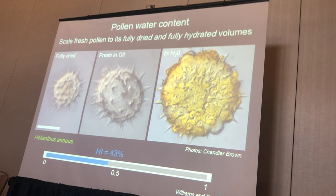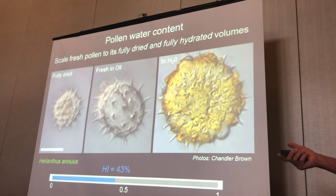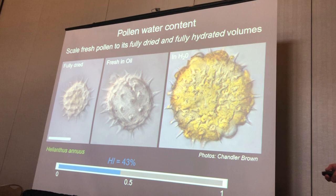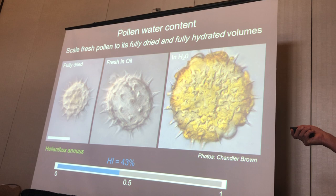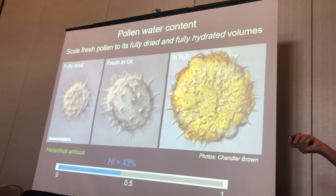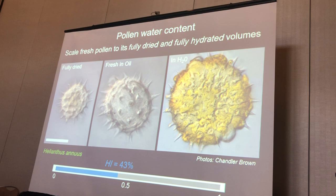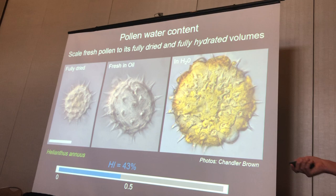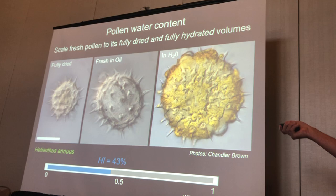Bicellular pollen has a lot of other things associated with it, one of which is water content. Pollen in general is often dehydrated when dispersed — we used to think all pollen was dehydrated. The problem is it's hard to measure water content in pollen because it's such a tiny organism. We developed a method to do this in the field: you take pollen from an anther, dry some of it in an oven or on a herbarium sheet, put the fresh pollen in oil to get the dispersal size, and hydrate the pollen in water to get the hydrated size. That tells you what the fresh size is relative to its minimum and maximum possible size — giving a hydration index. In this case, 43 percent, which is fairly hydrated.